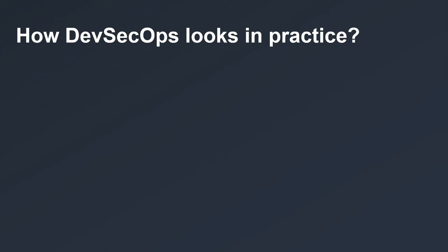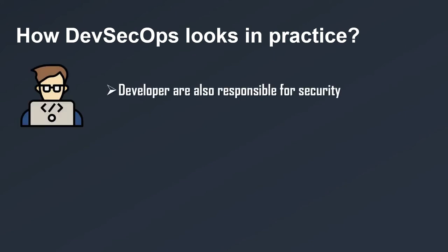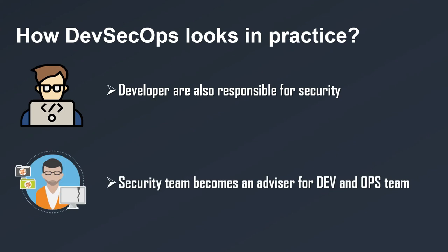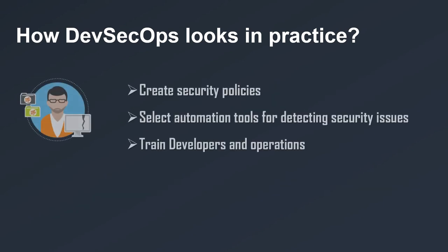Security becomes a developer responsibility too, instead of just being a responsibility of dedicated professionals. The security team itself becomes more of a facilitator and advisor to developer and operational teams, helping them understand and manage security rather than being like an external police that blocks development speed. The security team will create security policies, then create or select proper automation tools and platforms for detecting and identifying security issues and vulnerabilities — such as security scans, code quality checks, and automated security tests.